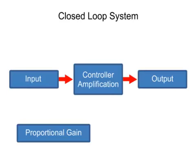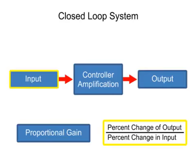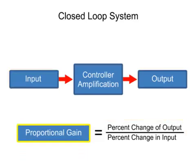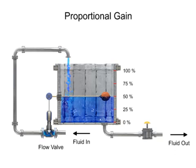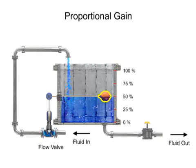The ratio of the change in output to the change in input is defined as proportional gain. To illustrate the concept of gain, a common process of regulating the level of fluid in a tank with a float attached to a control valve is used.